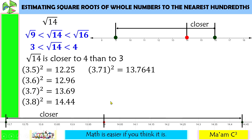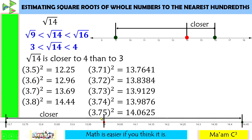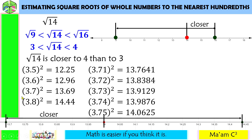These are 3.71 squared, 3.72 squared, 3.73 squared, 3.74 squared, and 3.75 squared. We do not need to square 3.76, 3.77, 3.78, and 3.79 because we are looking for numbers closer to 3.7 than to 3.8.